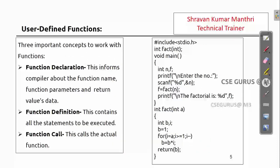User-defined functions have three important components. First is function declaration, written at the top of the program — it informs the compiler about the function name, parameters, and return value. For example, it tells the compiler that 'fact' is a function taking one integer and returning an integer. Second is function definition, which contains all the statements defining what the function actually does.